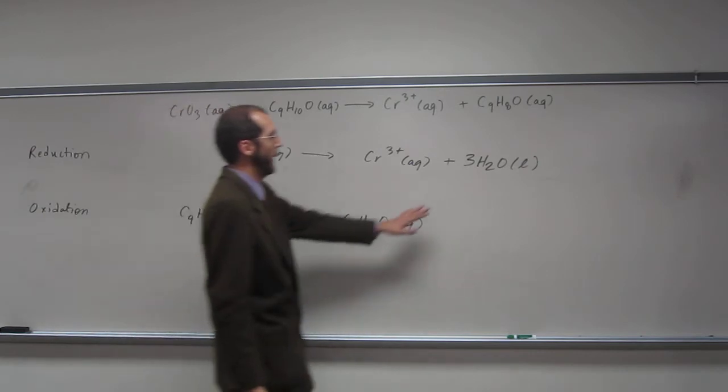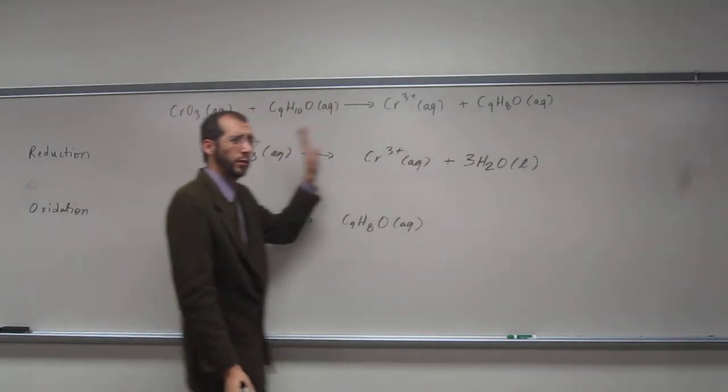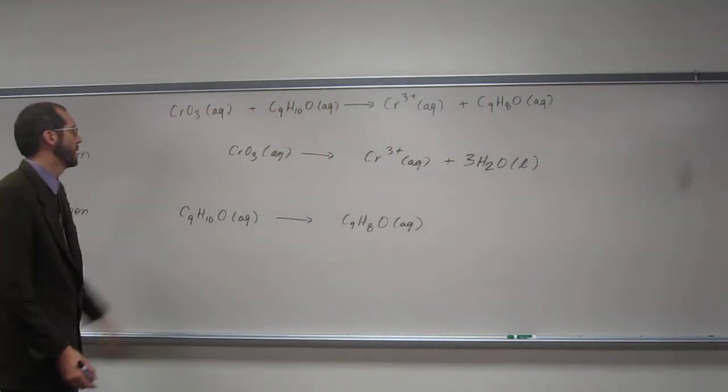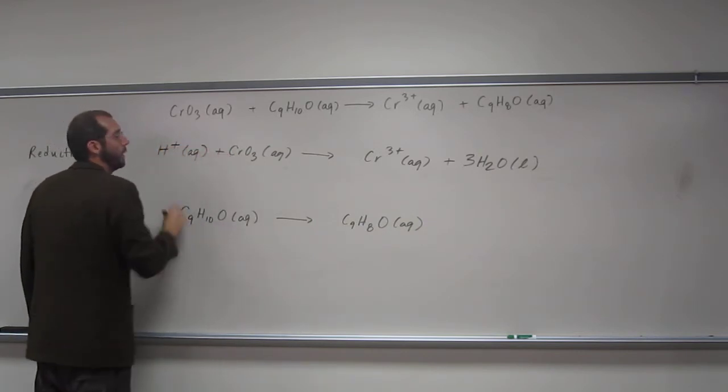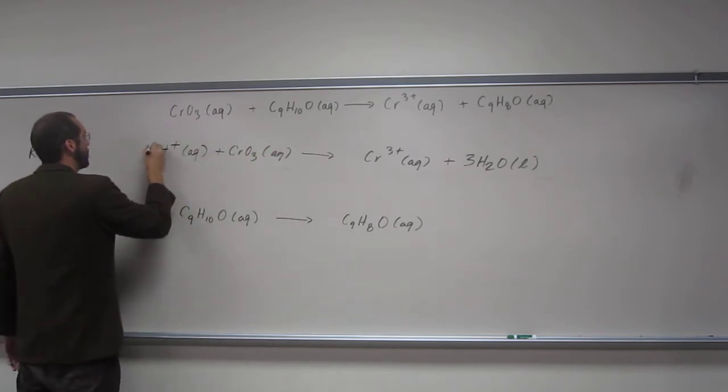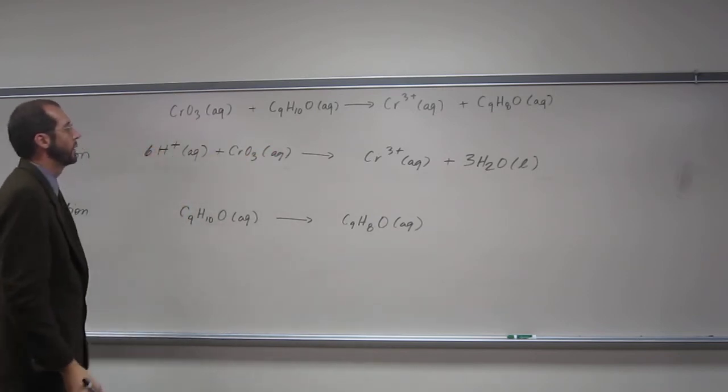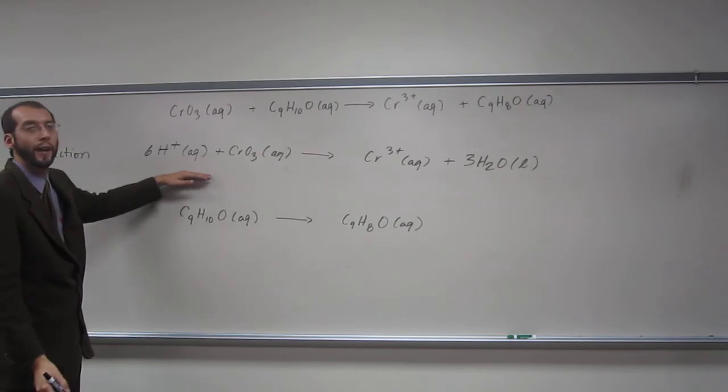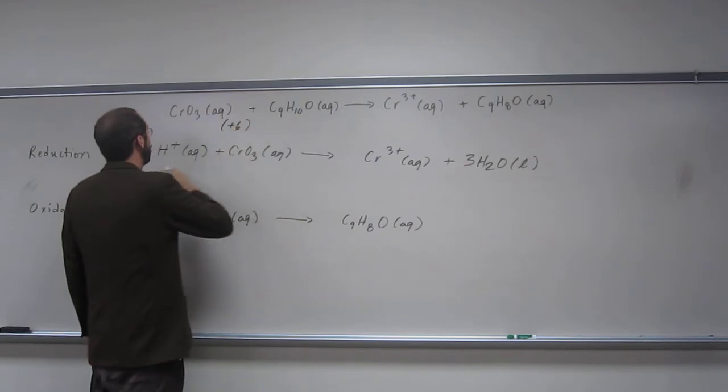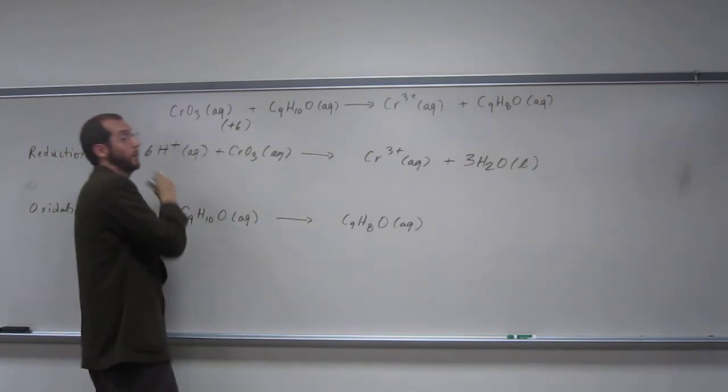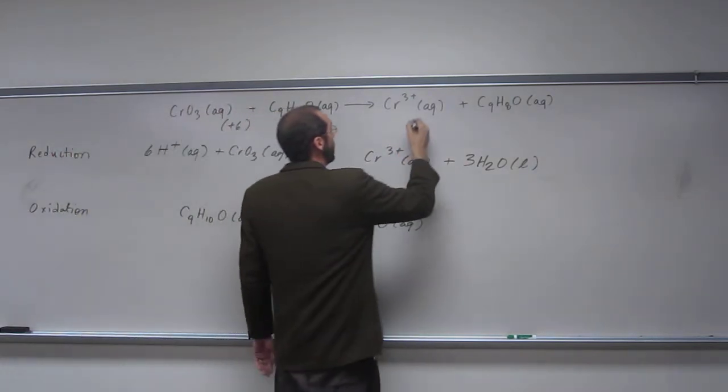After that, we balance the hydrogens as H+ on this side. So how many do we have? Six.